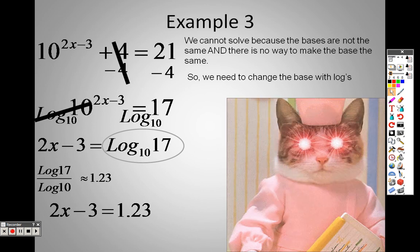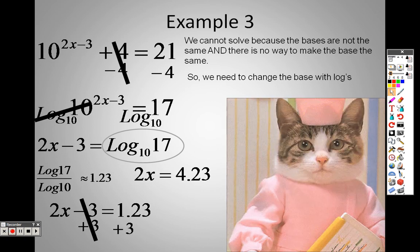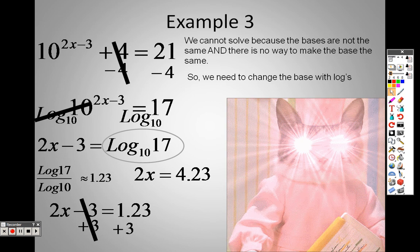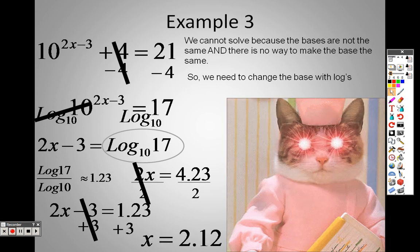Even though there's a decimal, it's still an easy equation to solve. I add 3 to both sides, so I get 2x equals 4.23. Divide both sides by 2, and I end up getting x equals 2.12 as an answer.